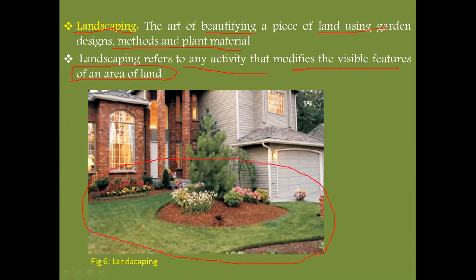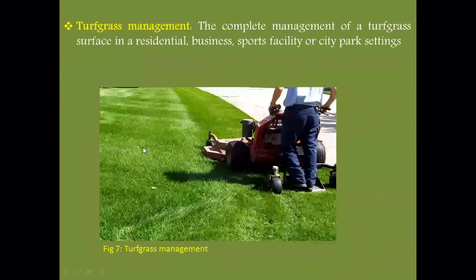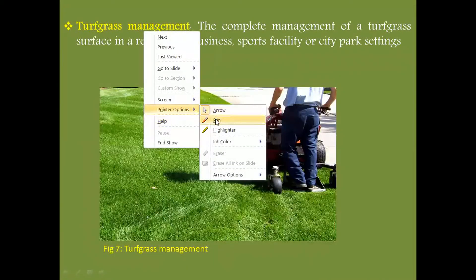In figure six, you can see an area whose visible features are modified by using different design techniques and various types of ornamental flowers and plants. So landscaping is the art of beautifying a piece of land by using different designs, methods, and plant materials.